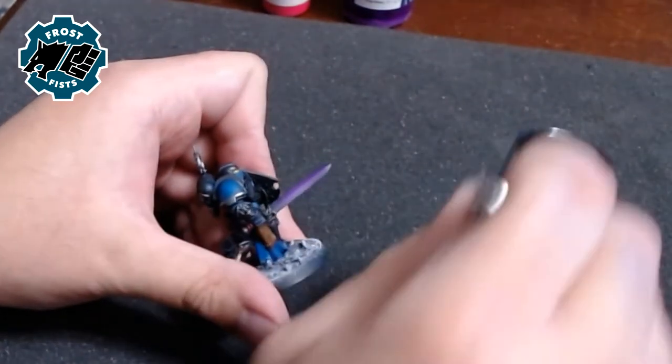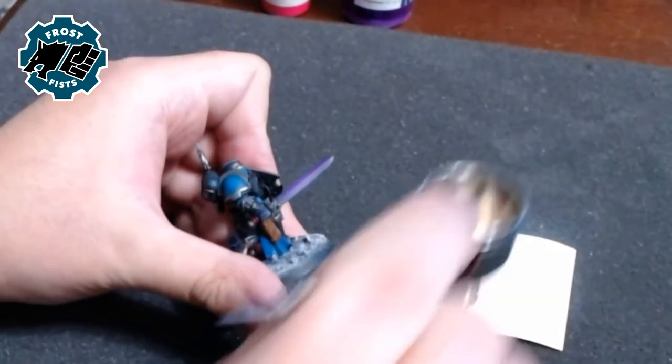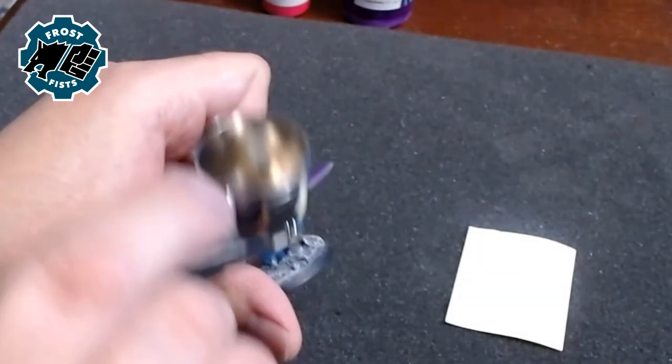And of course I check my consistency on the paper because finding out that the product is not coming out the way you want it on a miniature feels bad. If it's too heavy, you start getting sputtering or whatever, it feels bad to do it on a miniature. So I always like to keep a piece of scrap paper around.